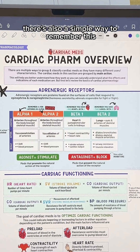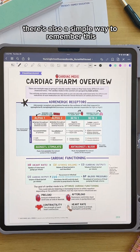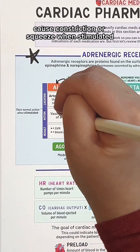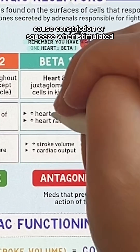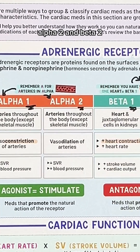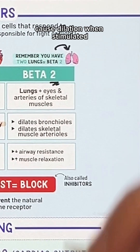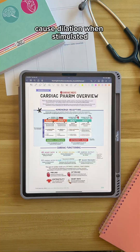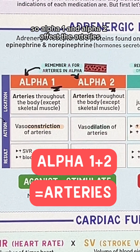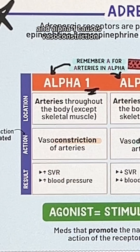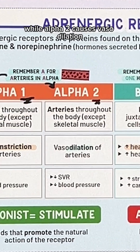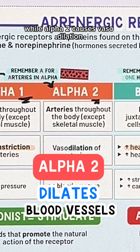For actions, there's also a simple way to remember this. Remember the 1s — alpha 1 and beta 1 — cause constriction or squeeze when stimulated, while the 2s — alpha 2 and beta 2 — cause dilation when stimulated. So alpha 1 causes vasoconstriction, while alpha 2 causes vasodilation.